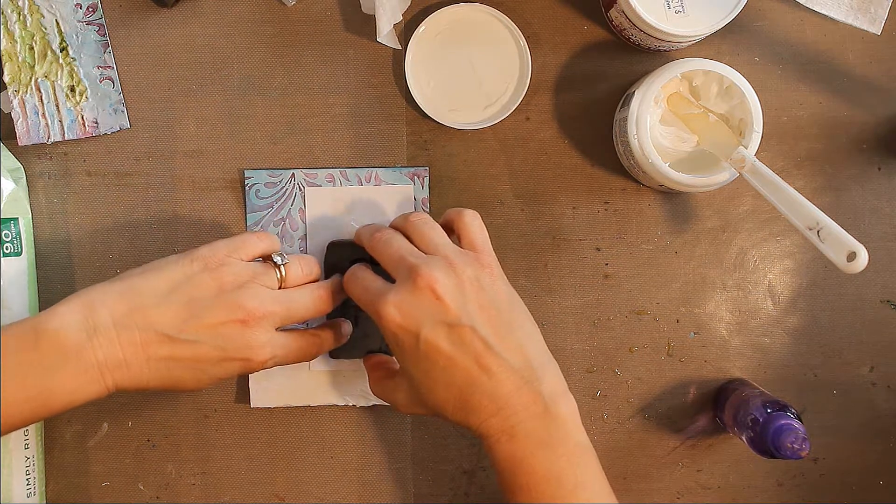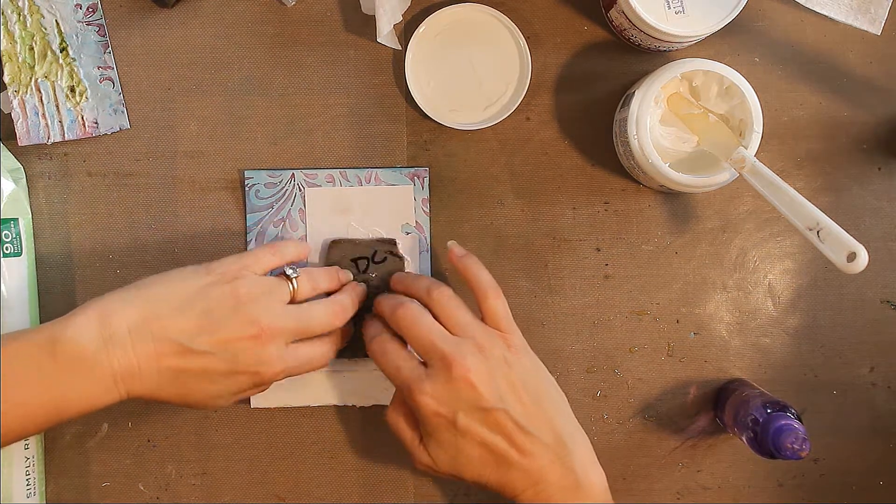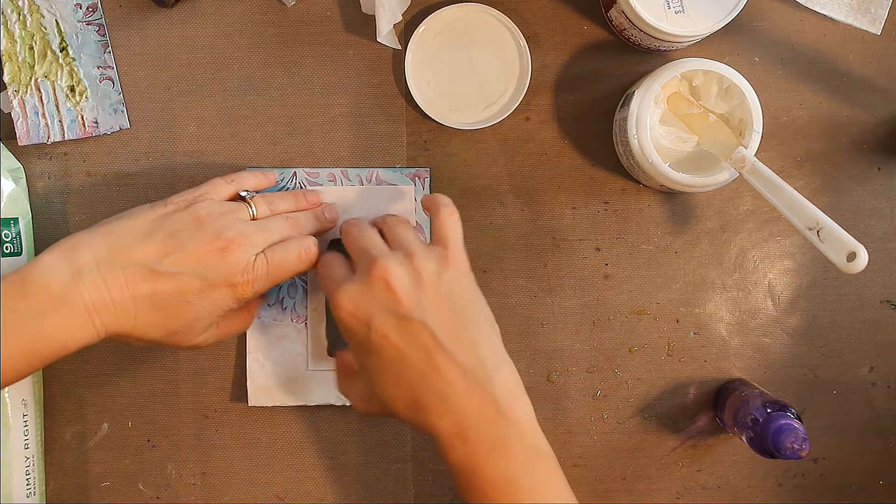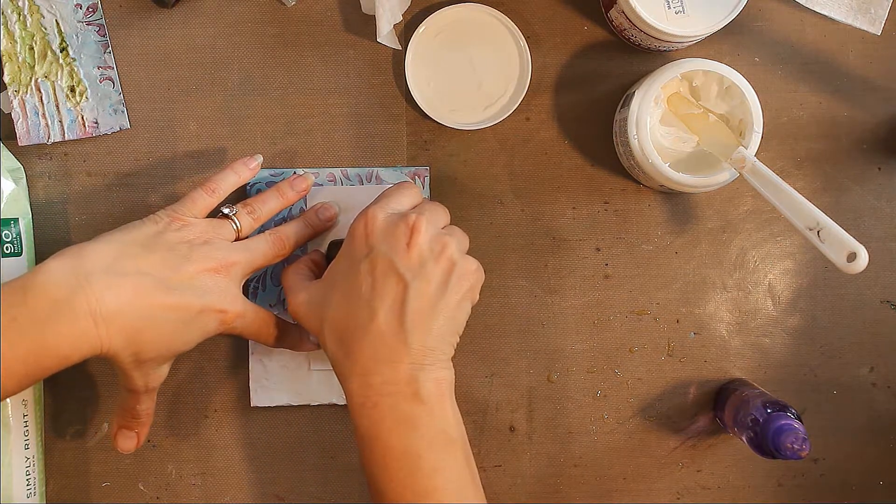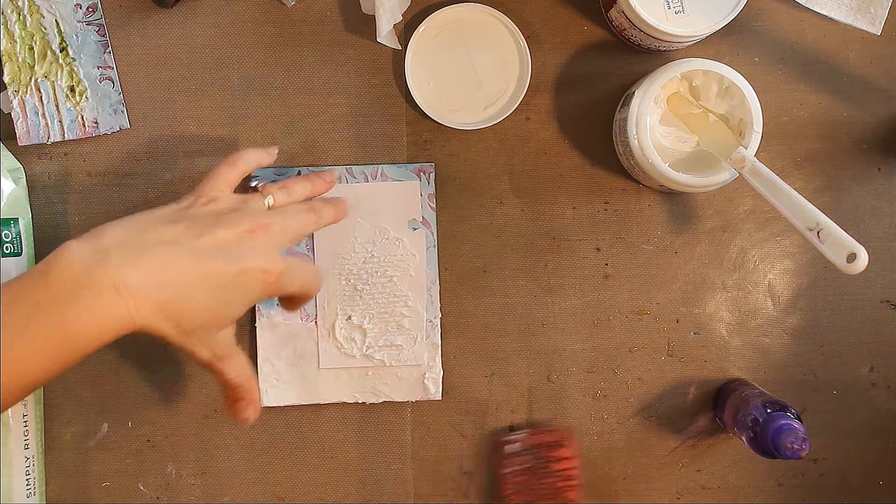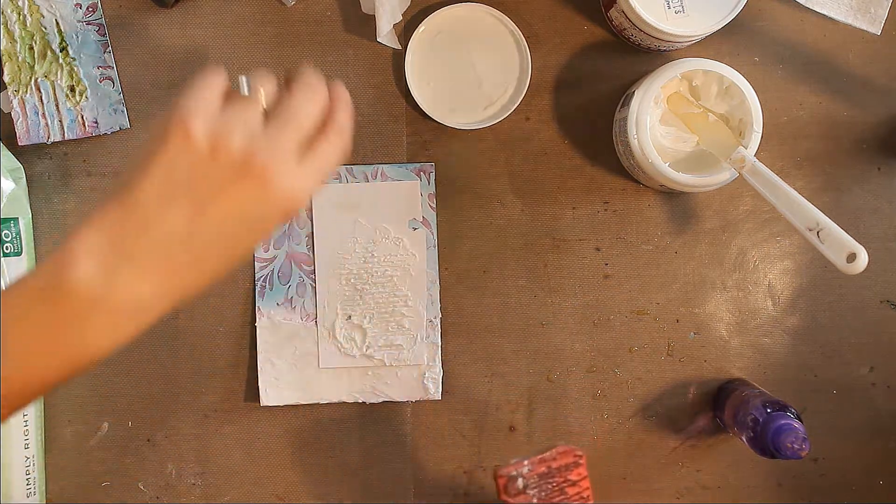Take your stamp, place it into your embossing paste, lightly press, you don't have to press too hard, and then you want to peel up. And you'll see there's some paste in there.